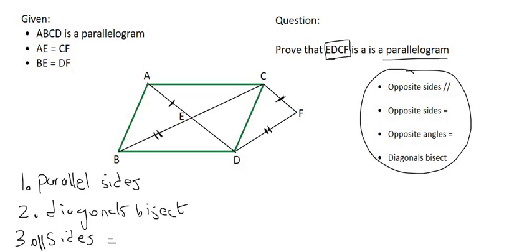So we know that its diagonals bisect each other, so we can say that AE is equal to ED. And the reason for that will just be diags, meaning diagonals, of a parallelogram. So we can instantly do that over there.